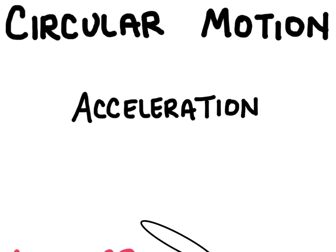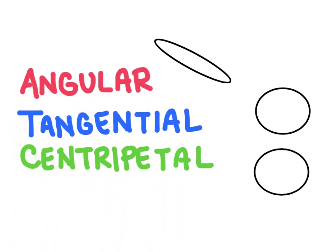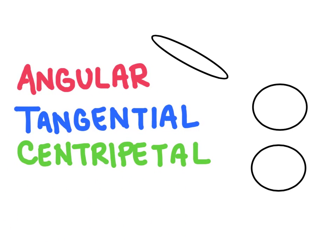In this video we're going to talk about acceleration when objects are traveling in circular motion. There are three types of acceleration when dealing with objects traveling in circles: angular acceleration, tangential acceleration, and centripetal acceleration. Angular acceleration is directed out of the middle of the circle. Tangential acceleration is tangent to the circle, and centripetal acceleration points directly into the center of the circle.